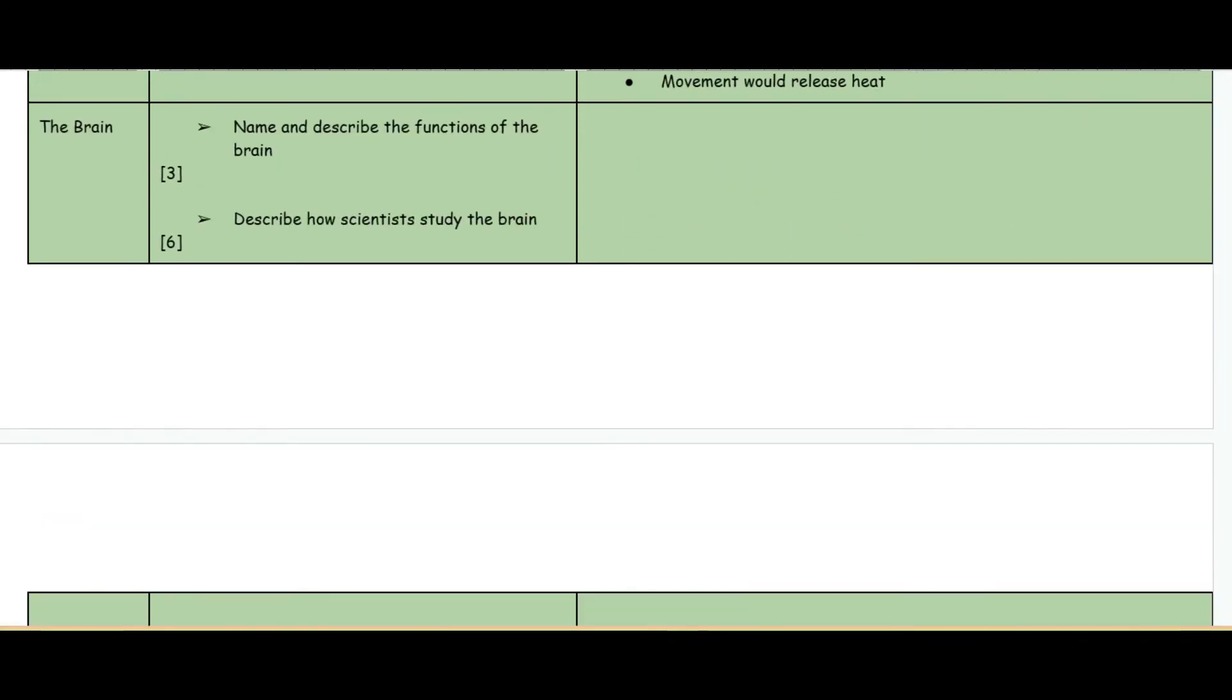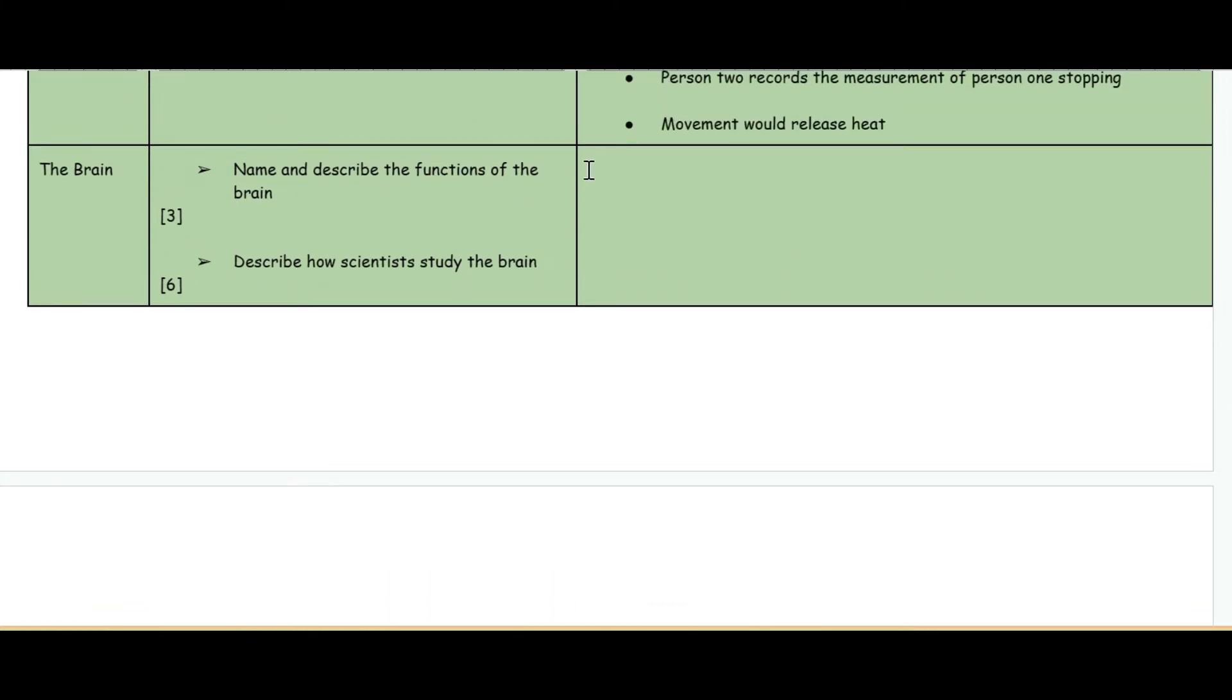The next subtopic: the brain. Name and describe the functions of the brain. You've got the cerebral cortex which is responsible for memory, language, consciousness, etc. Then you've got the medulla which is responsible for involuntary coordination, for example the heart rate and breathing rate. Then you've got the cerebellum which is responsible for voluntary coordination, for example your muscles moving when you're lifting something up.